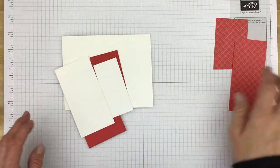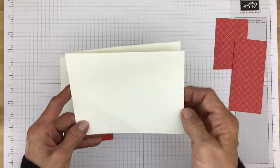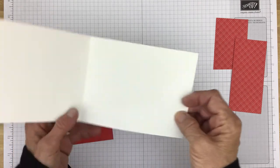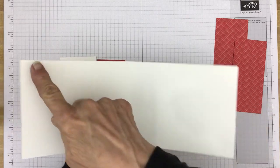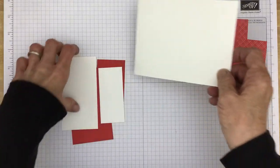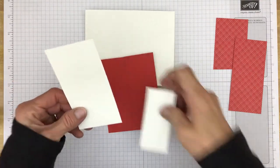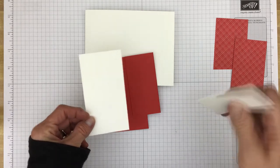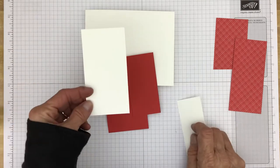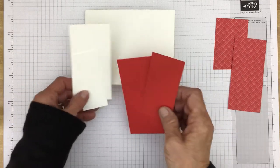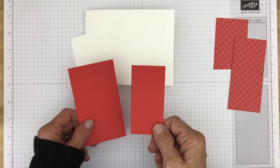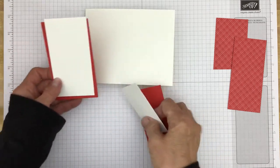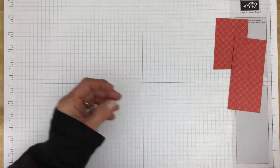So we have the designer series paper and then we're going to need basic white cardstock that is four and a quarter inches by eleven inches scored and folded at five and a half. We'll also need a piece of basic white that is one and a half by three and a quarter, this one is two and a quarter by four and a quarter, and then the poppy parade is one and three quarter by three and a half and two and a half by four and a quarter.